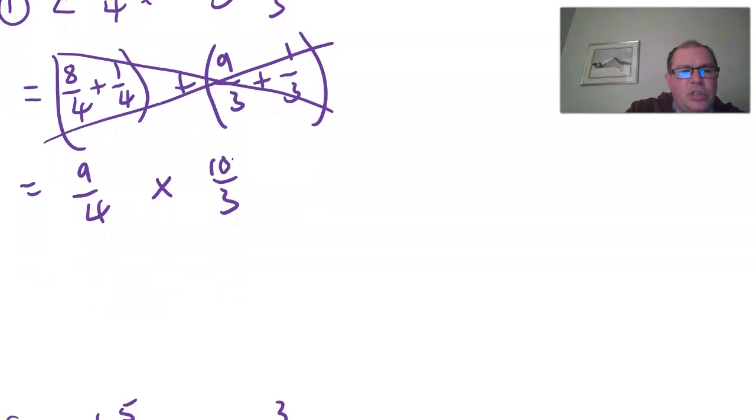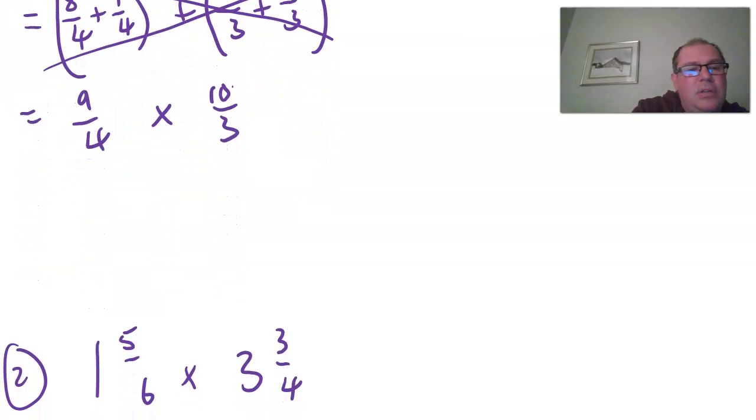So now you can just use the laws. I'm going to choose to cancel. So nine over three is the same as three over one. And ten over four, two goes into ten five times and two goes into four twice. So you can cancel those to make your life easier. And so three times five on top is fifteen and two times one on the bottom is two.